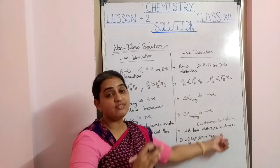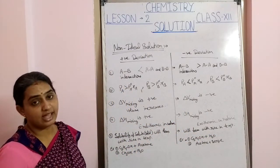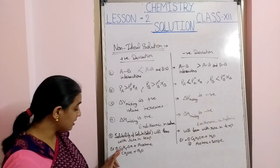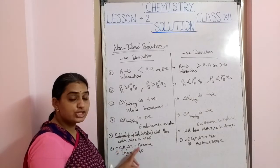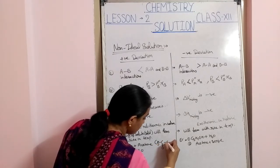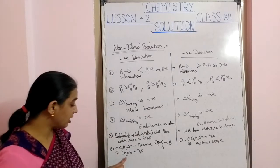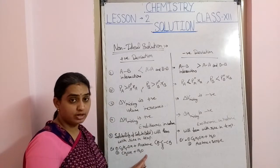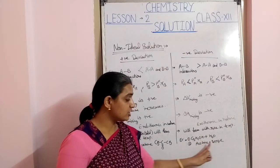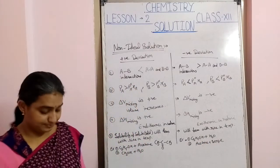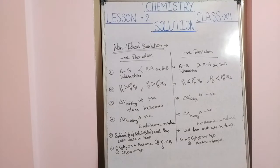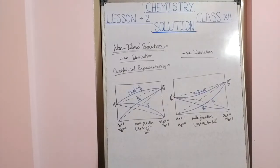Examples of positive deviation: ethanol (C2H5OH) plus acetone (CH3COCH3). Examples of negative deviation: methyl alcohol plus water, and acetone plus chloroform.